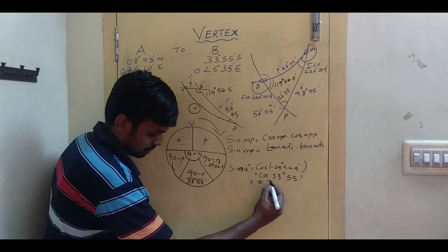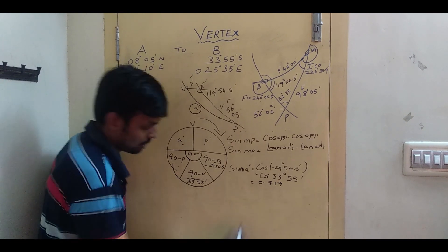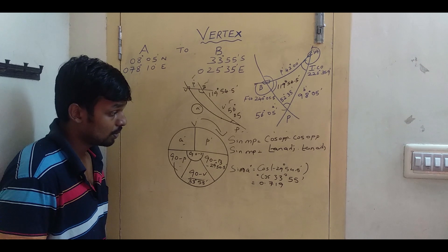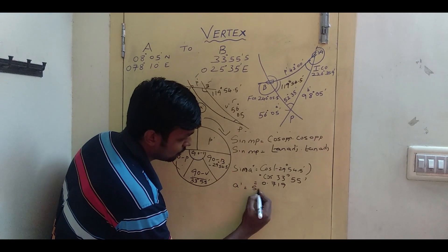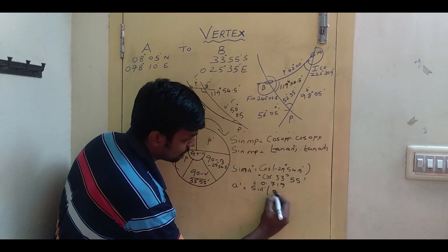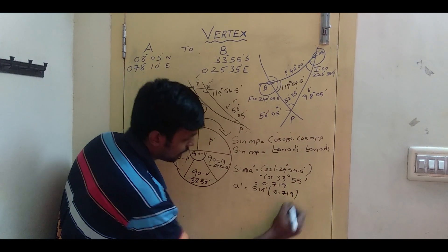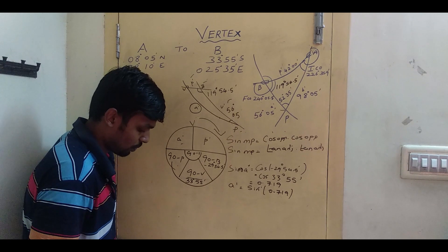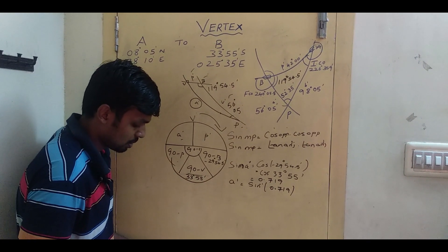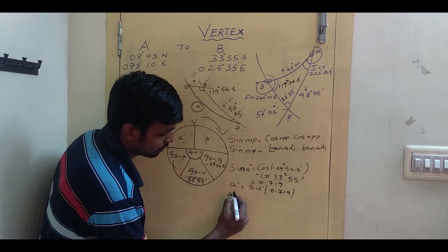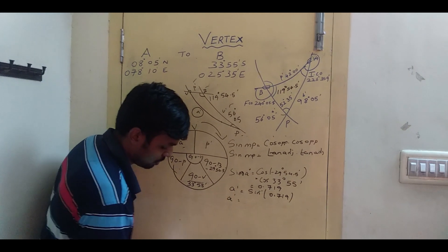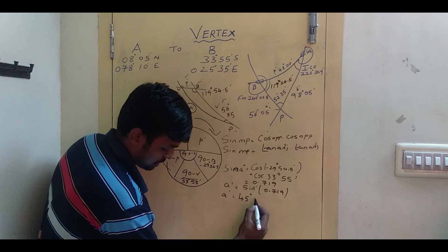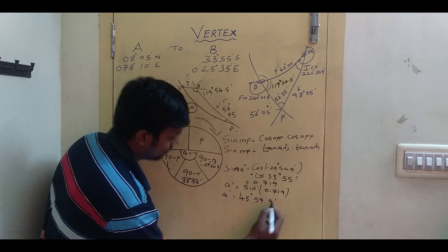So: sine A' = cos(−29° 54.5') × cos(33° 55'). This gives 0.719. Taking sine inverse of 0.719, A' equals 45° 59.9'.